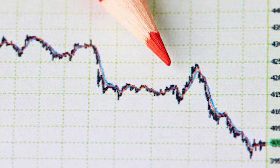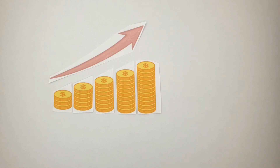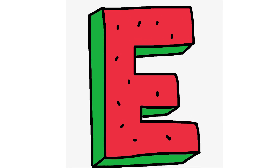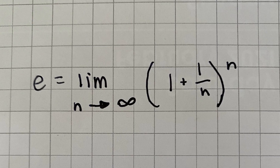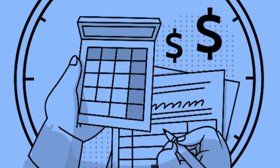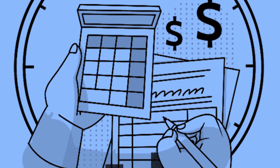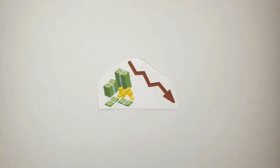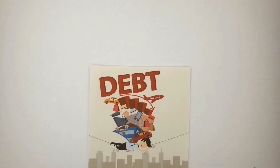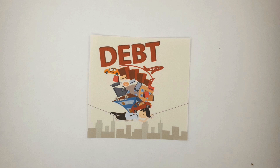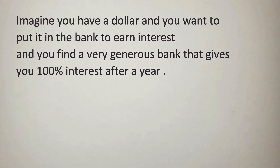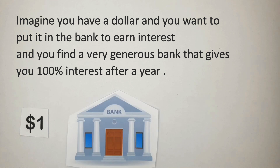What does this mean? Basically, whenever something or a system continuously grows or declines, e is brought into the equation. E is used to show the amount of interest at the end of a year if the value was compounded every instant of the entire year. Imagine you have a dollar and you want to put it in the bank to earn interest, and you find a very generous bank that gives you 100% interest after a year.